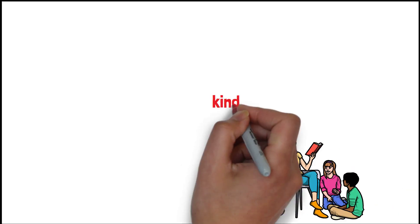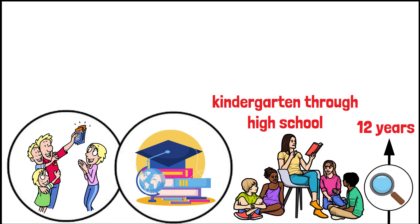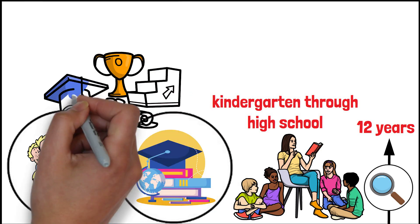Imagine a researcher studying the academic progress of students from kindergarten through high school. By tracking the same group of students for 12 years, the researcher could see how different factors like family support or school quality impact academic achievement over time.